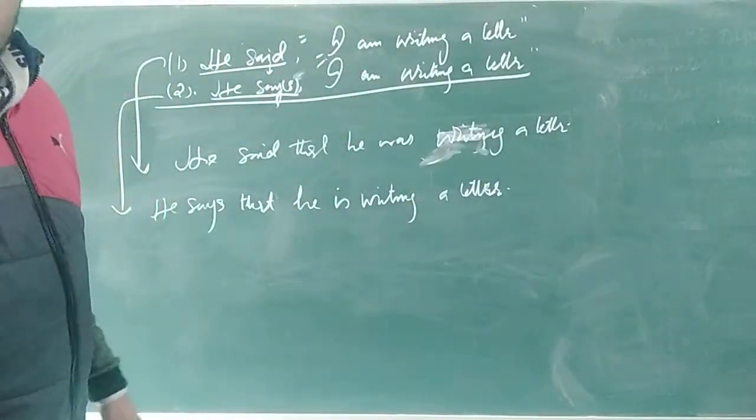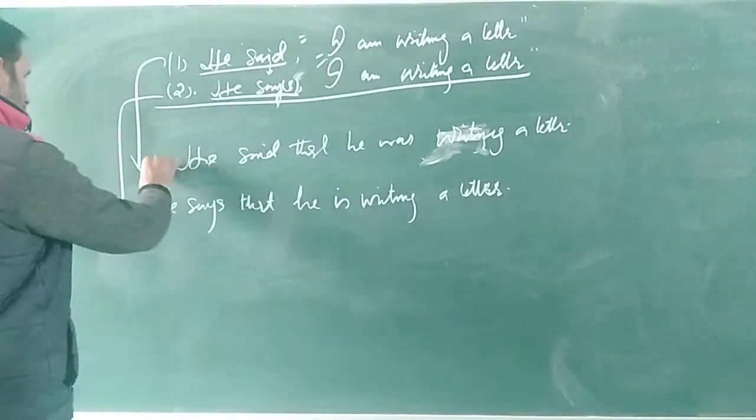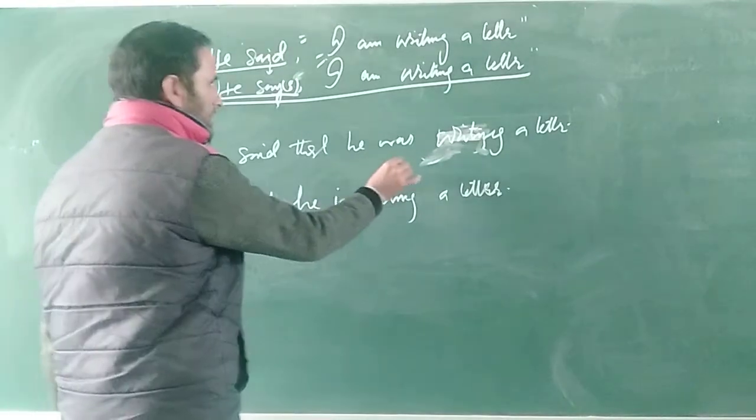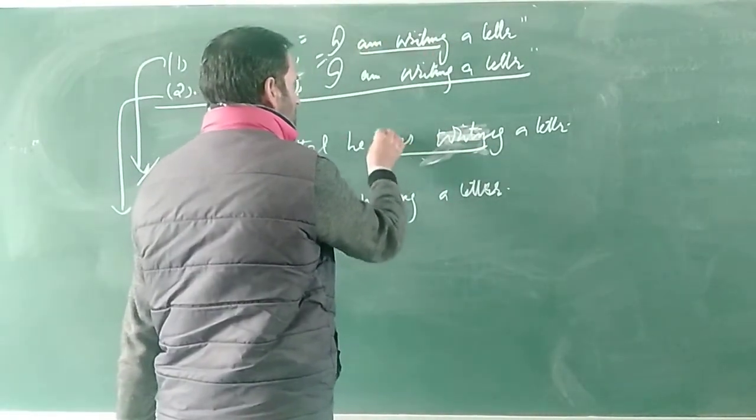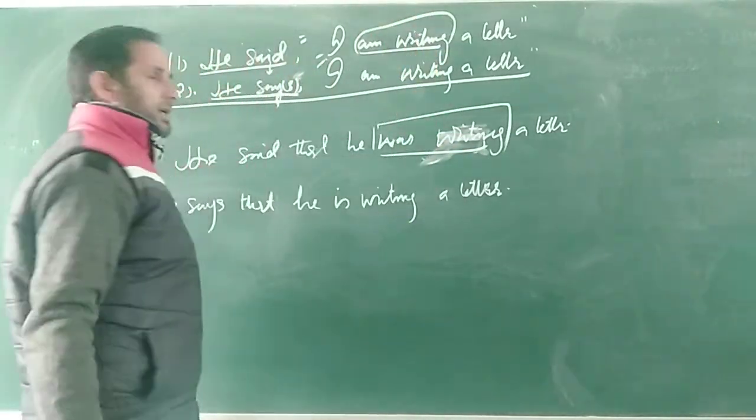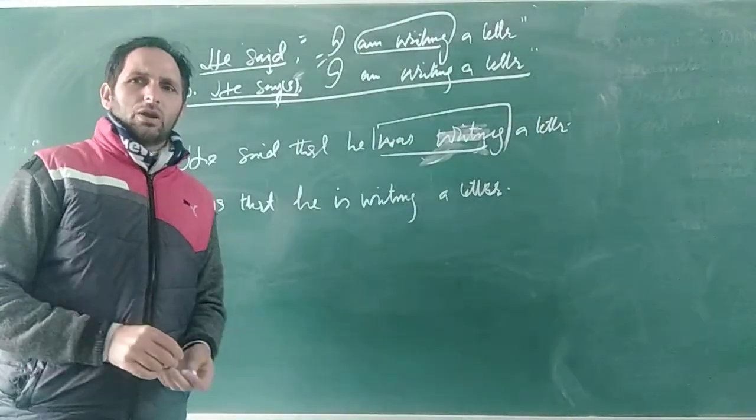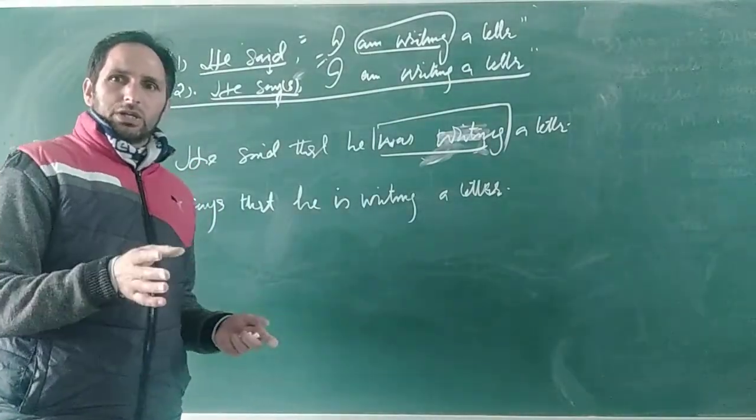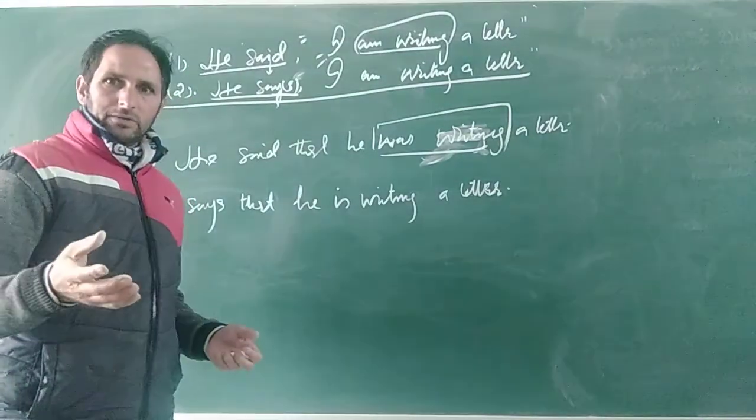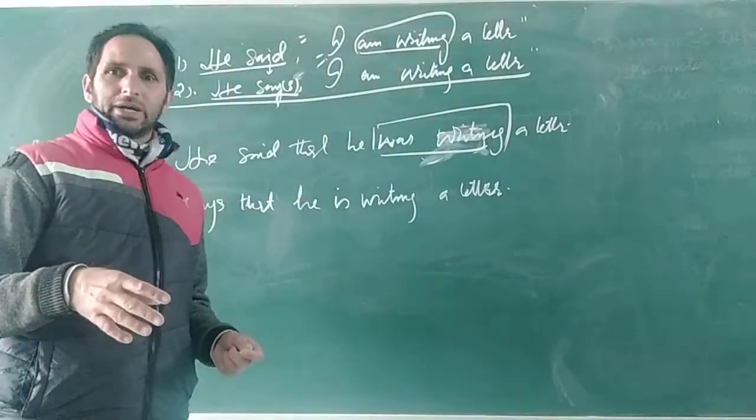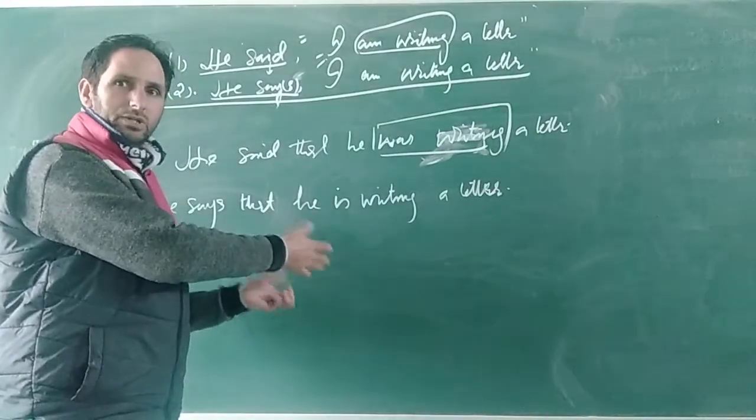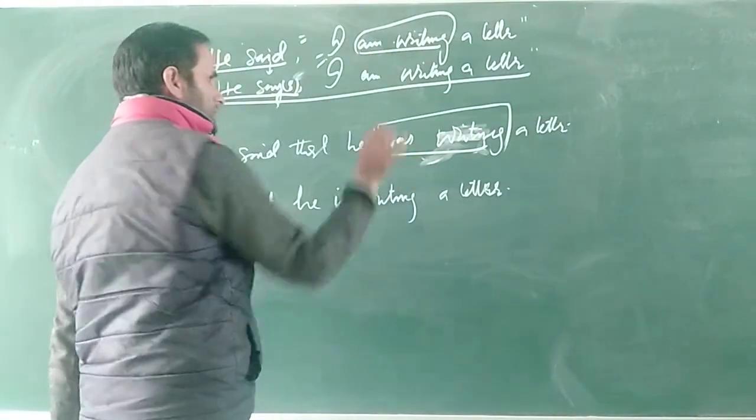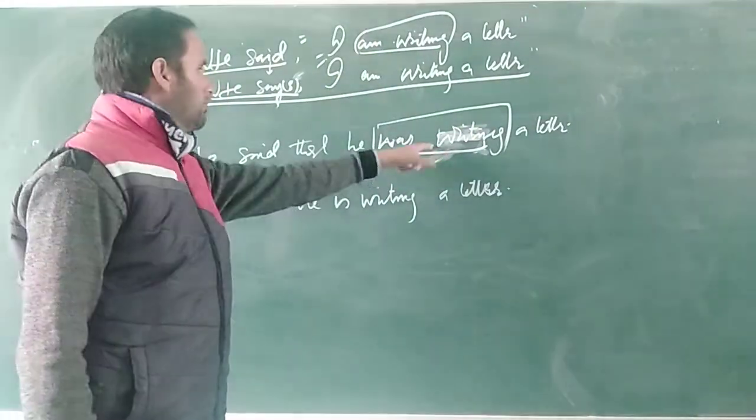I am writing got changed into was writing. Precisely saying, present continuous got changed into past continuous. I am not going to deal with the elaborate rules that are going to take enormous time. We should be technical enough. We are not going to face academic examination. In case we are going to face academic examination, the best way I think is to understand in this way that I am going to show you here. He said that he was writing a letter. Present continuous got changed into past continuous. I am writing equal to was writing.